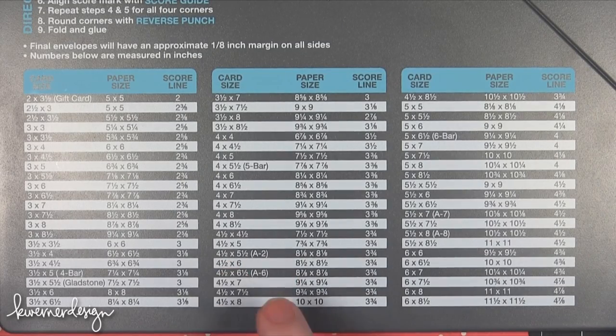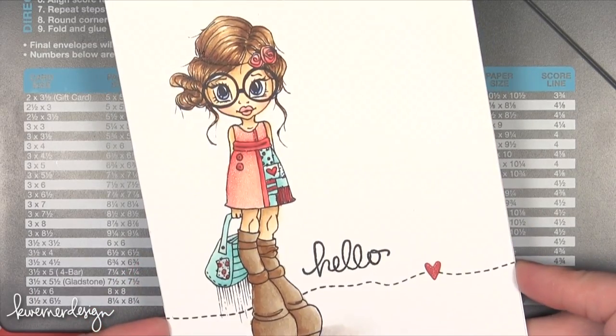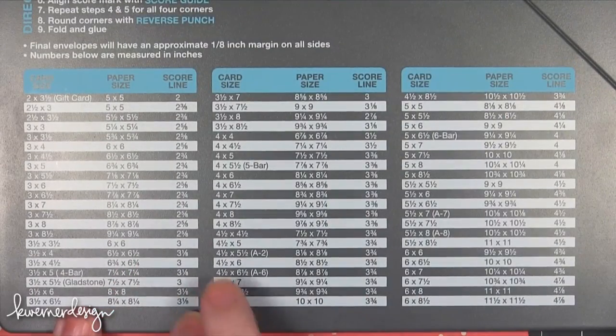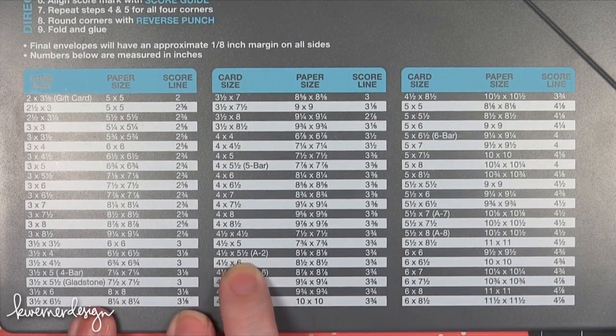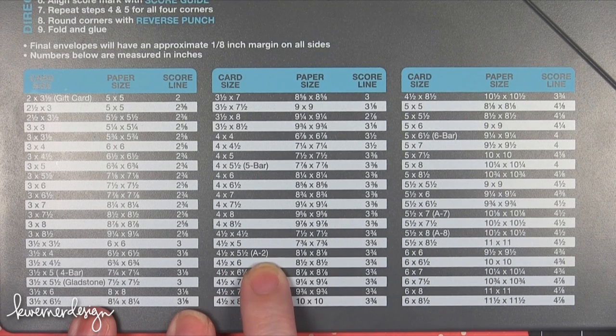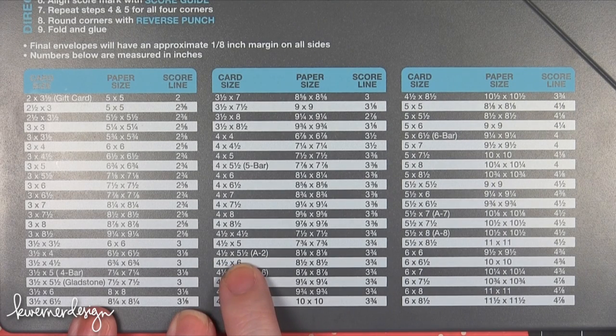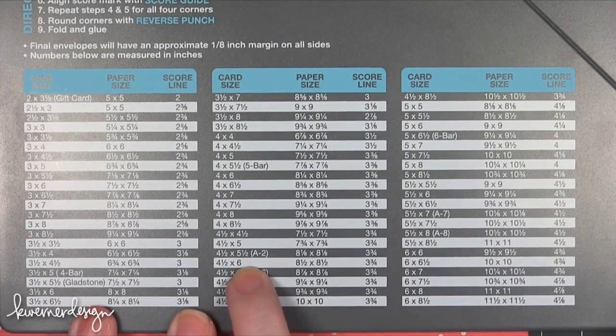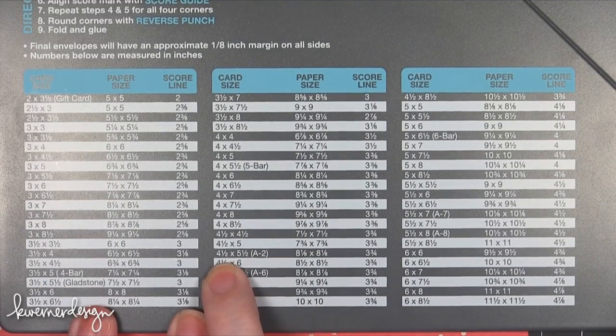For the card I'm going to be making an envelope for today, which is this card from this week's Color Wednesday video, I'm looking for a four and a quarter by five and a half and the closest size they have is four and a half by five and a half and they say that's A2. I think they're saying that's the closest measurement and if you wanted to make an envelope for an A2 card that's the size you would work with. It's just slightly larger, a little more wide, four and a half instead of four and a quarter.